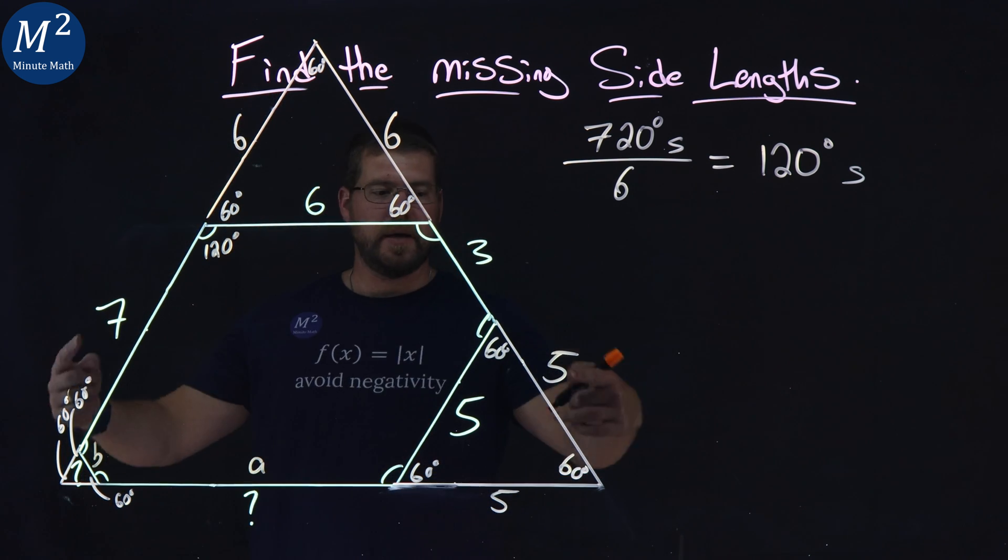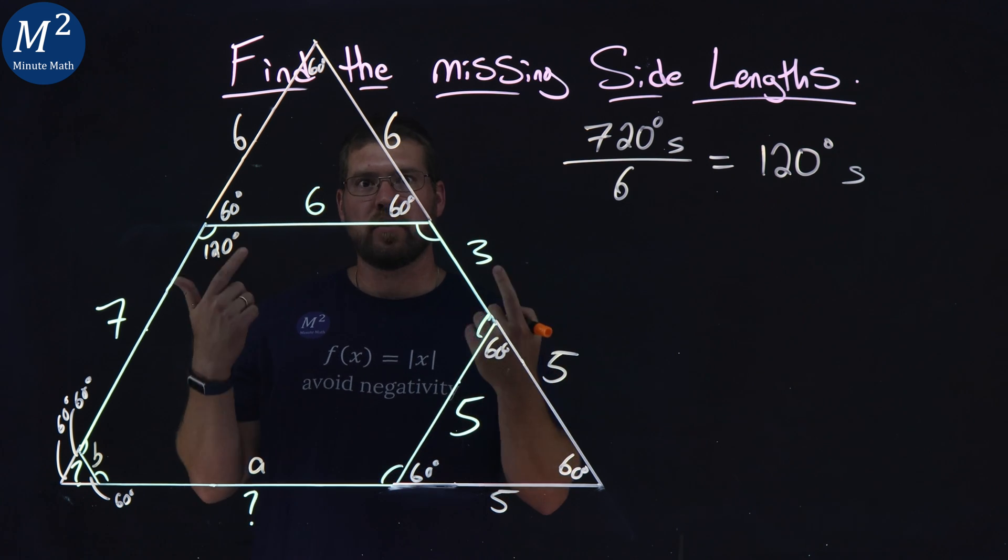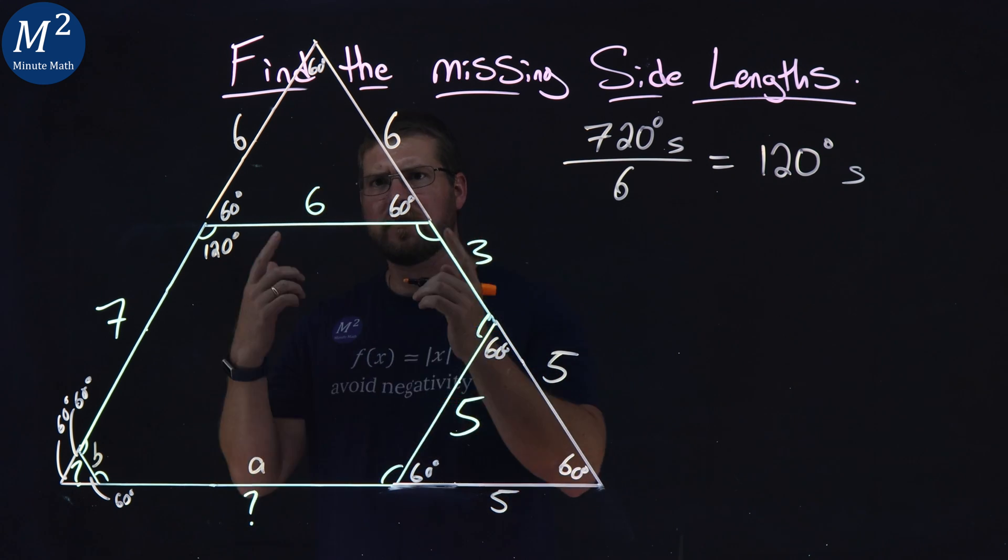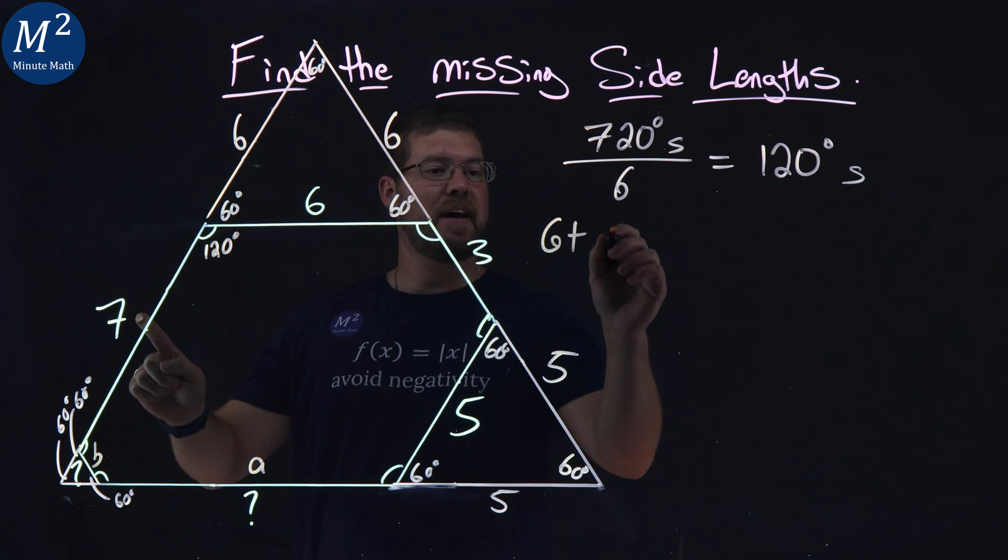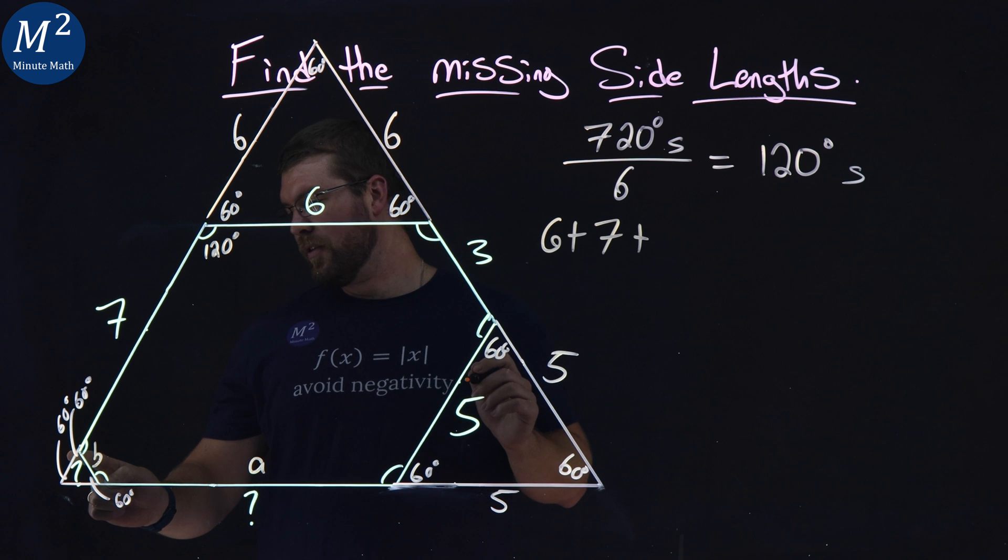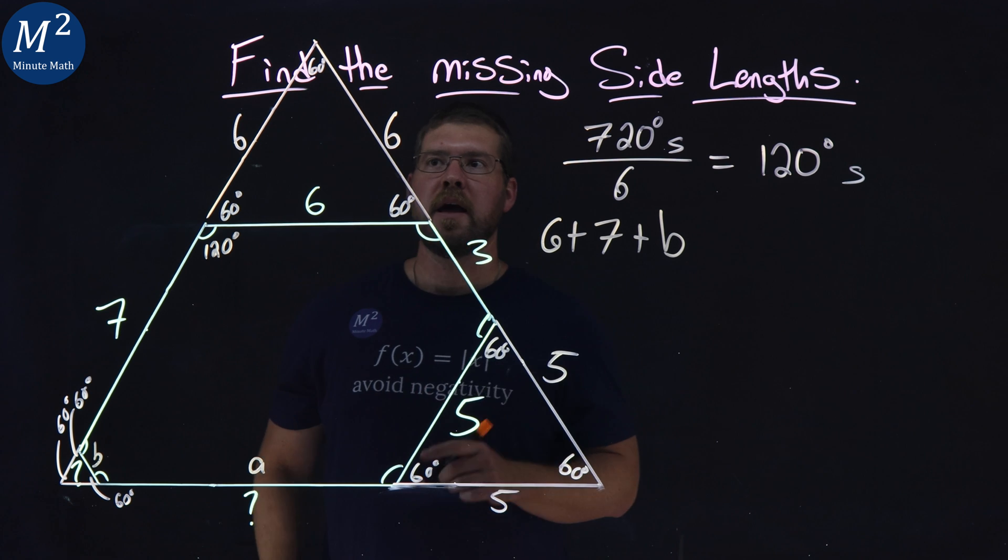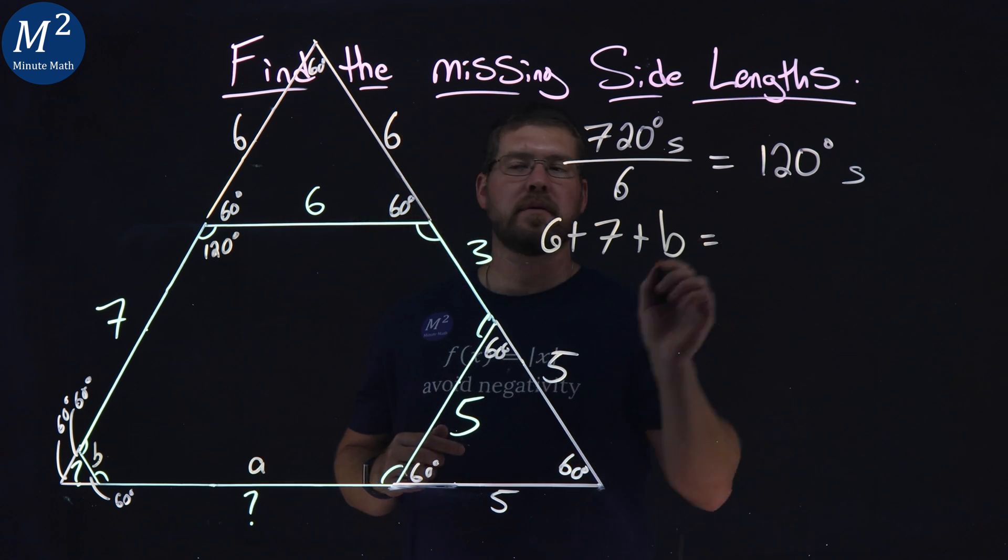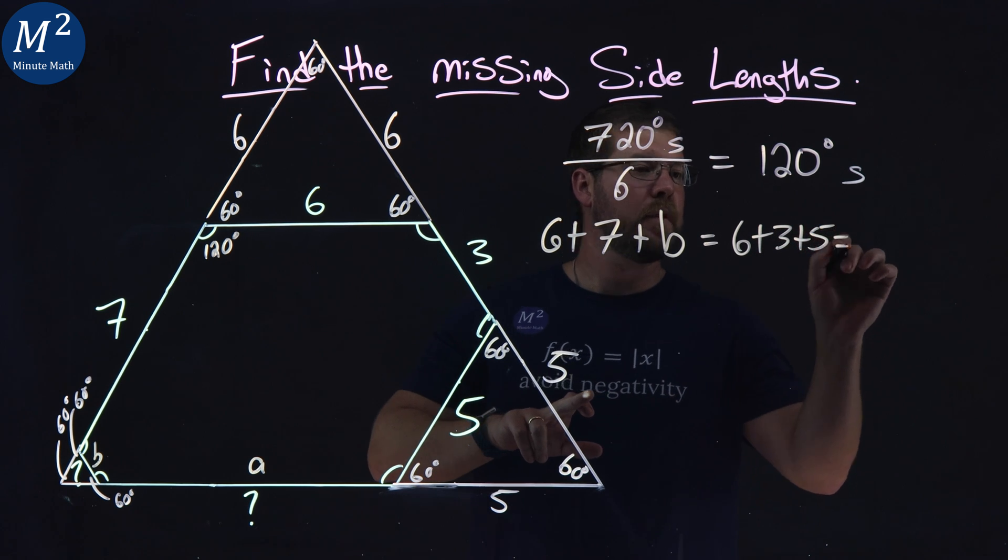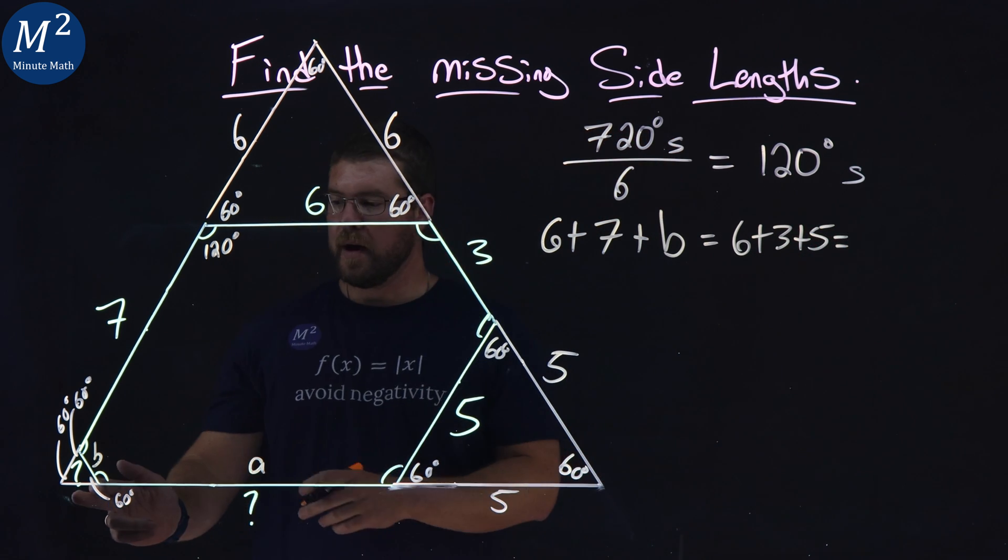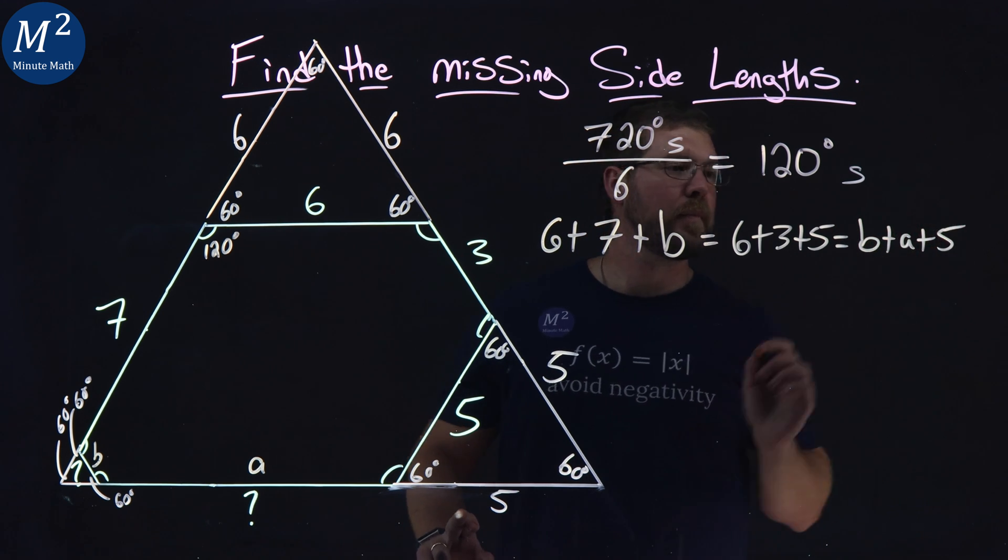What do we know about the big triangle? Again, 60, 60, 60. All side lengths are the same length. So let's call it some equations here. The left side length is 6 plus 7 plus a length of B. Remember, all these little ones are the same. B here. And then it's going to be equal here to 6 plus 3 plus 5, which should be equal to the bottom one, B plus A plus 5. Right there.